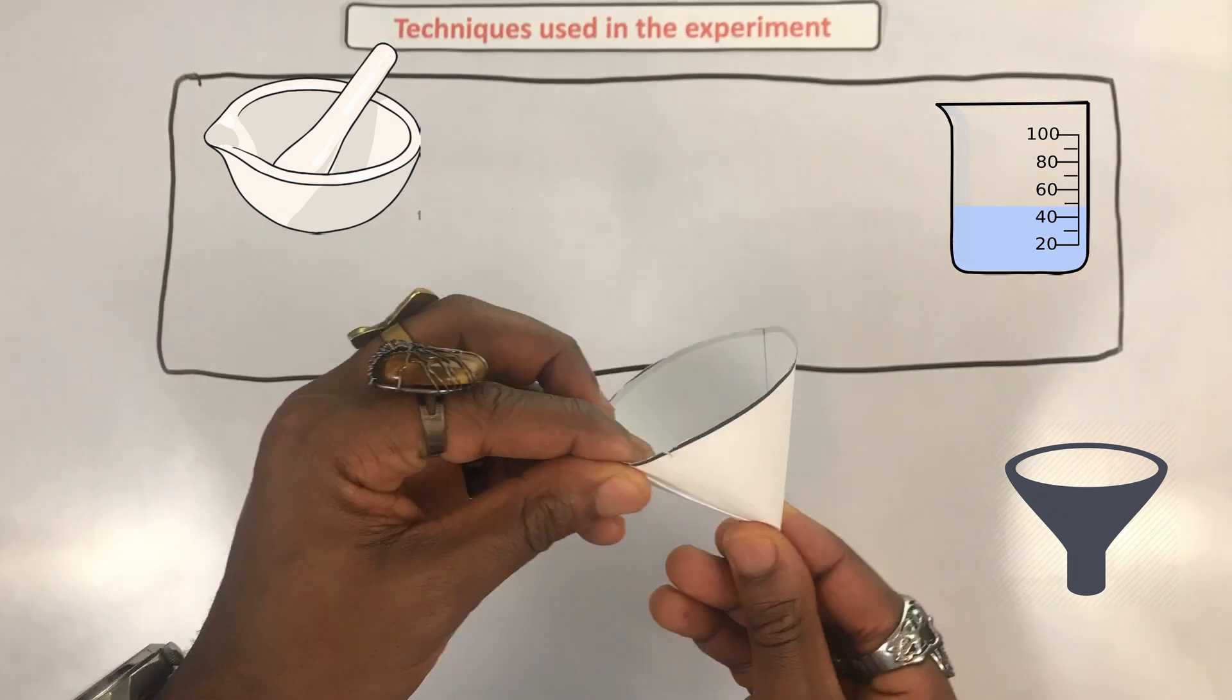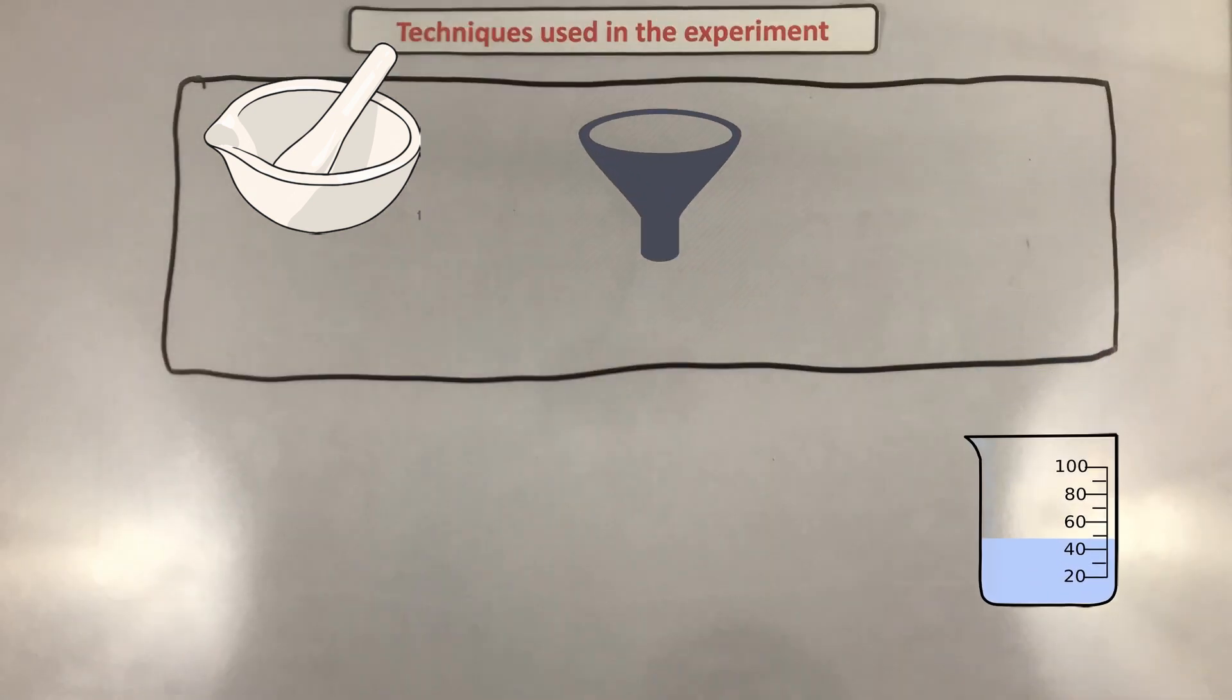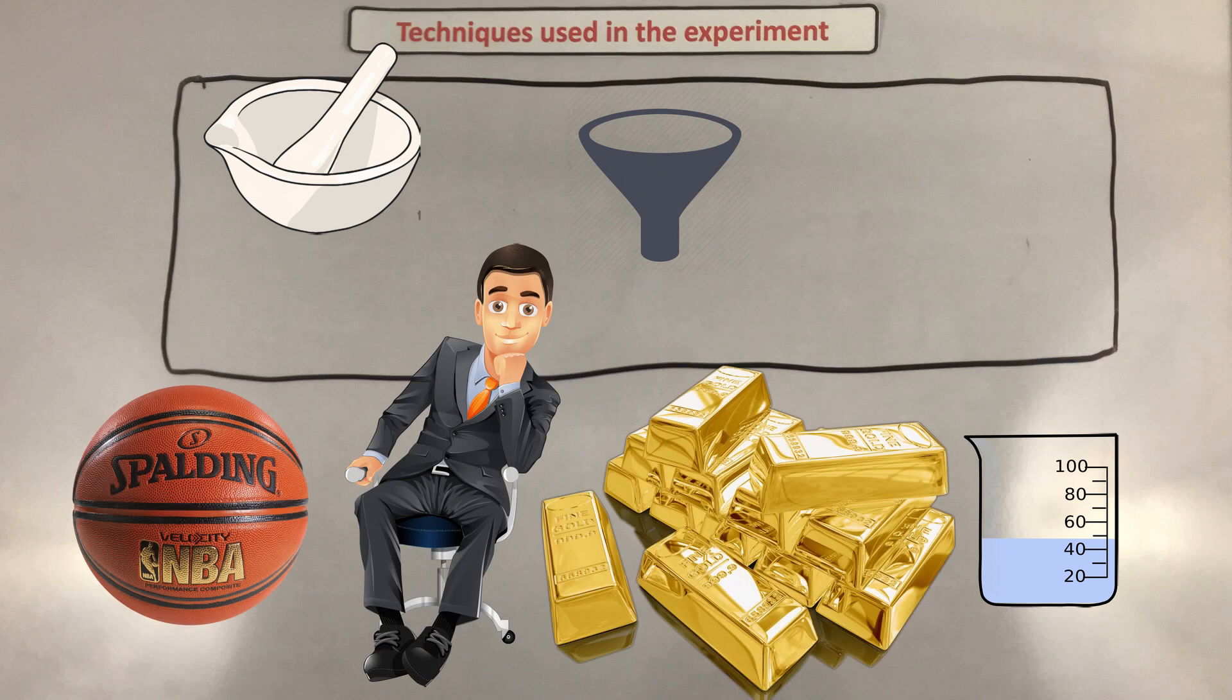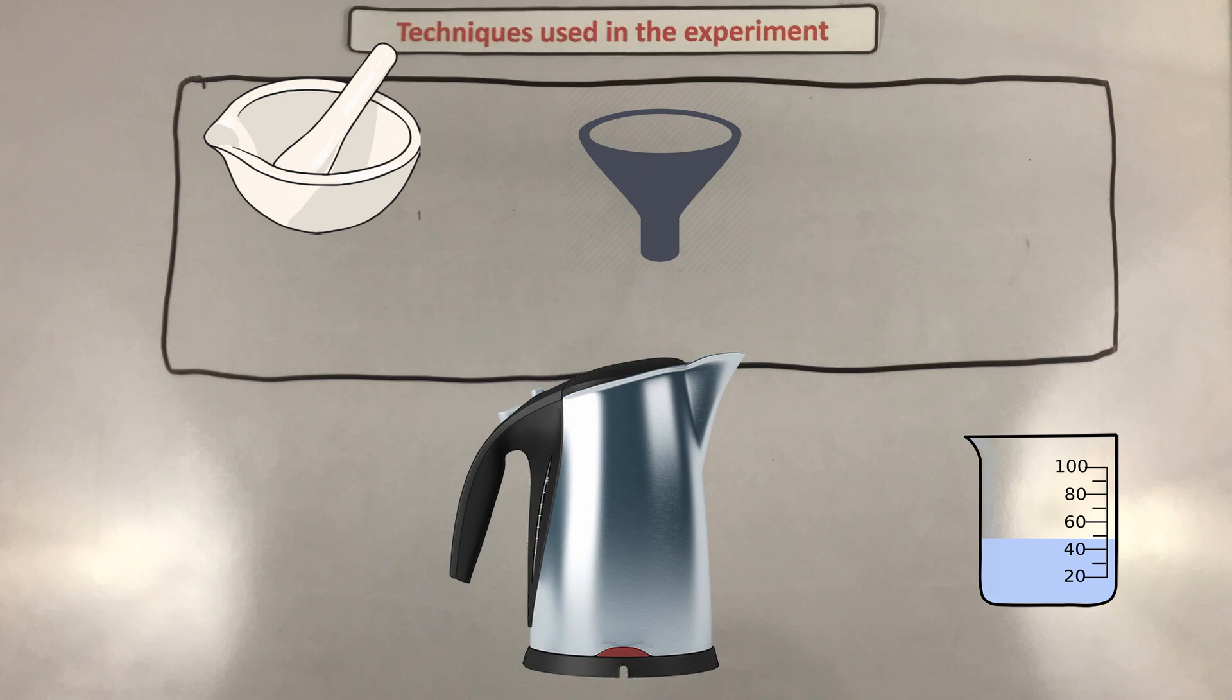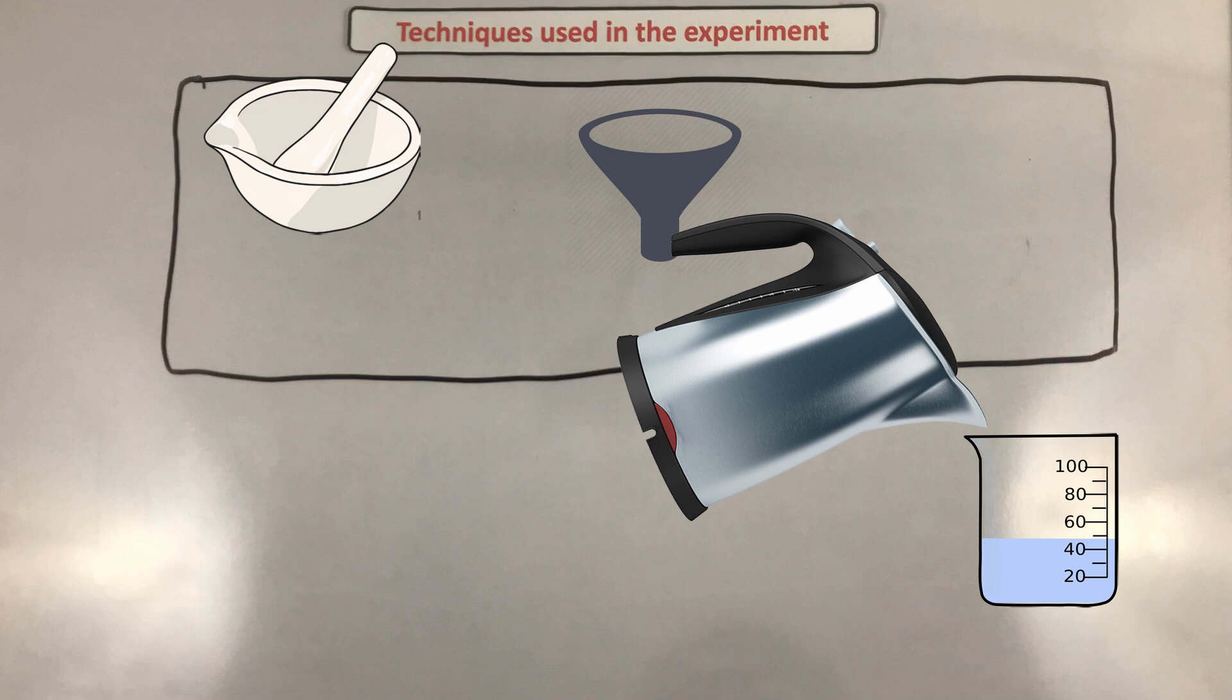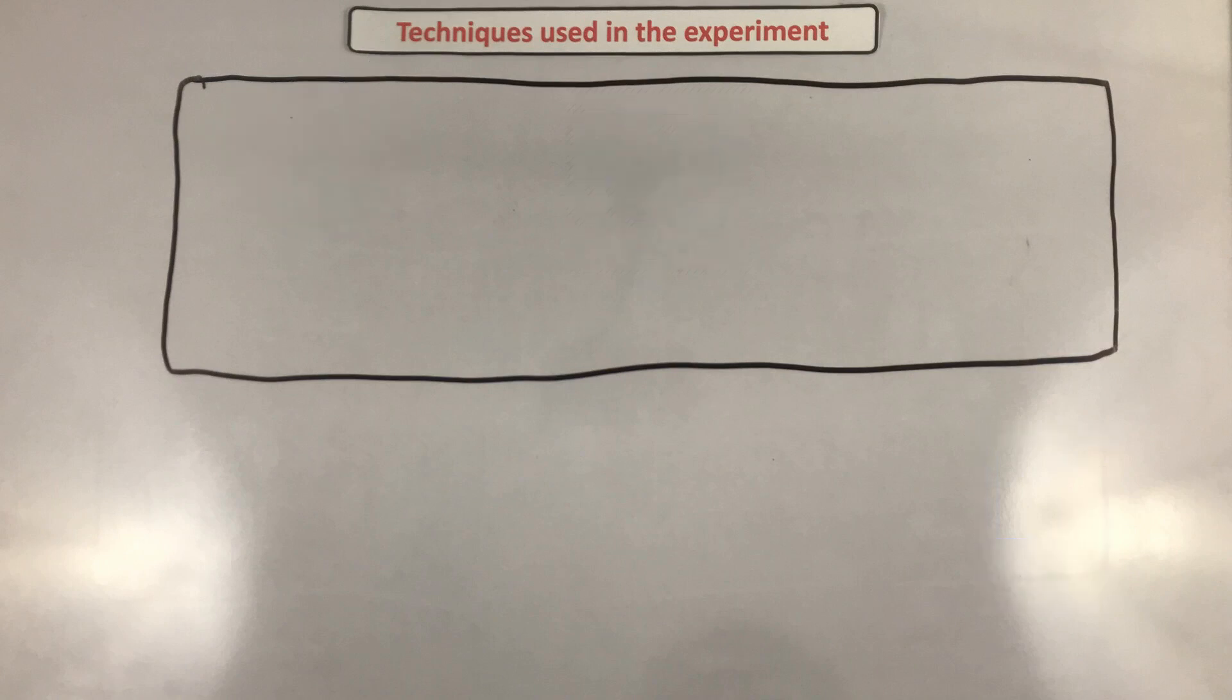The final one is the water bath. If your principal is a baller, a shot caller, you may just have those big water baths that you can just press the temperature you need and wait for the water to get to that temperature. But all isn't lost if your school isn't living it up like that - just boil some water in a kettle, put that water in a beaker, and voila, a very inefficient water bath. Since we're constantly losing thermal energy into the surroundings, it's good enough for food tests, so don't stress too much.